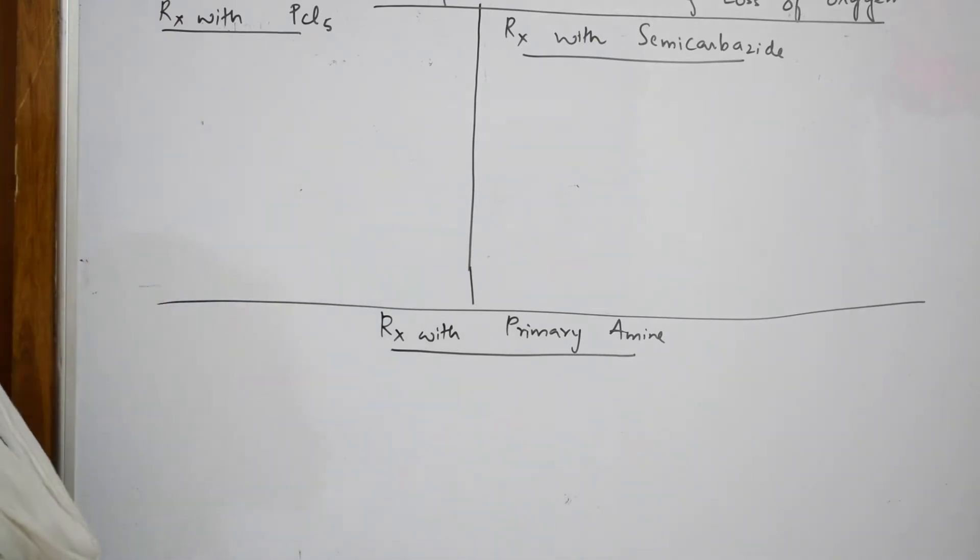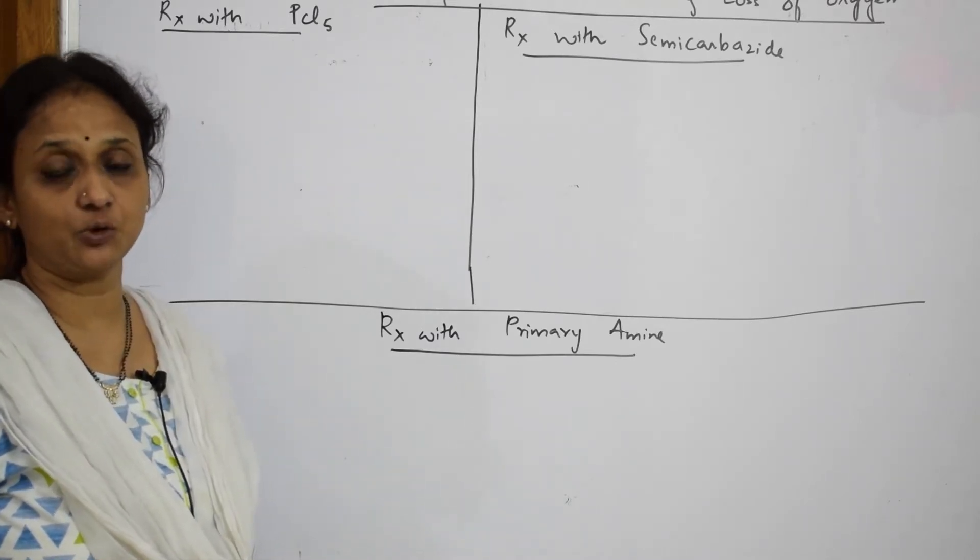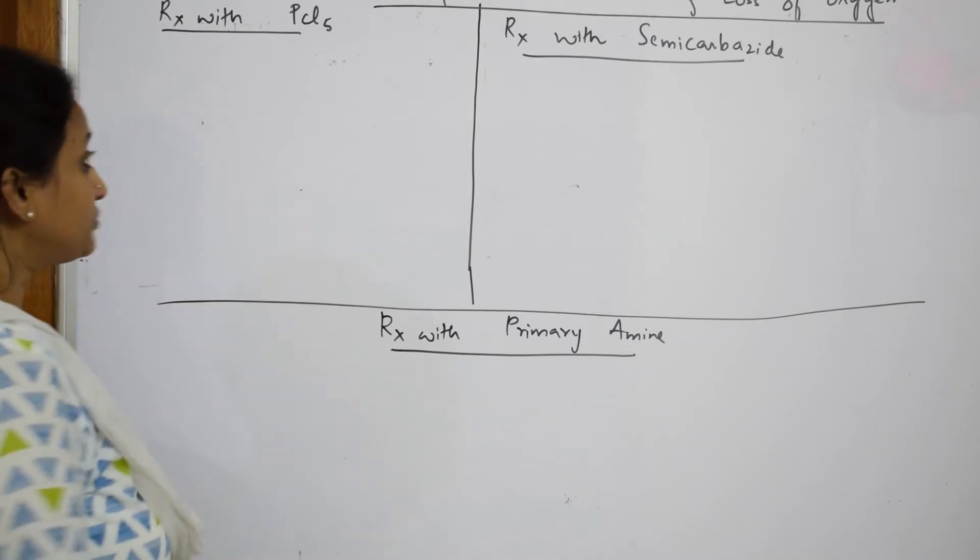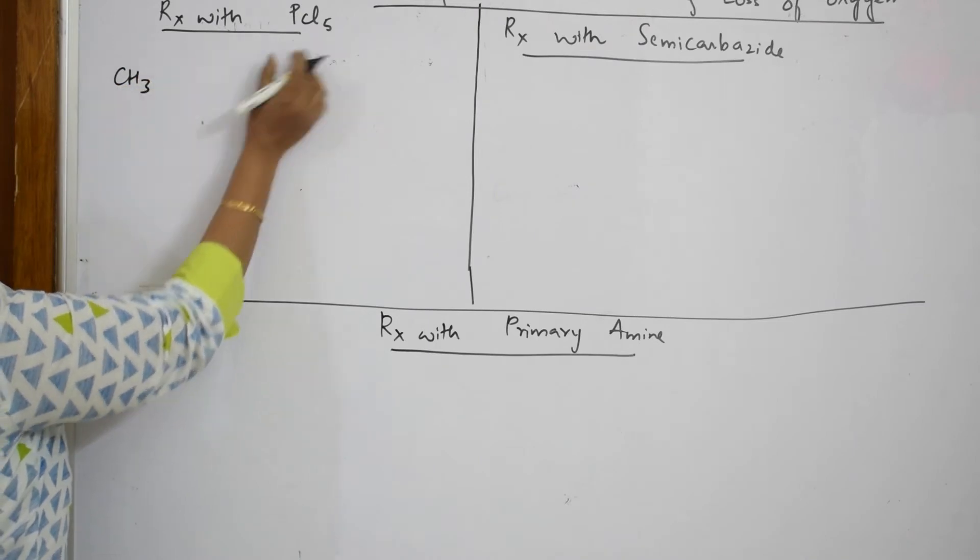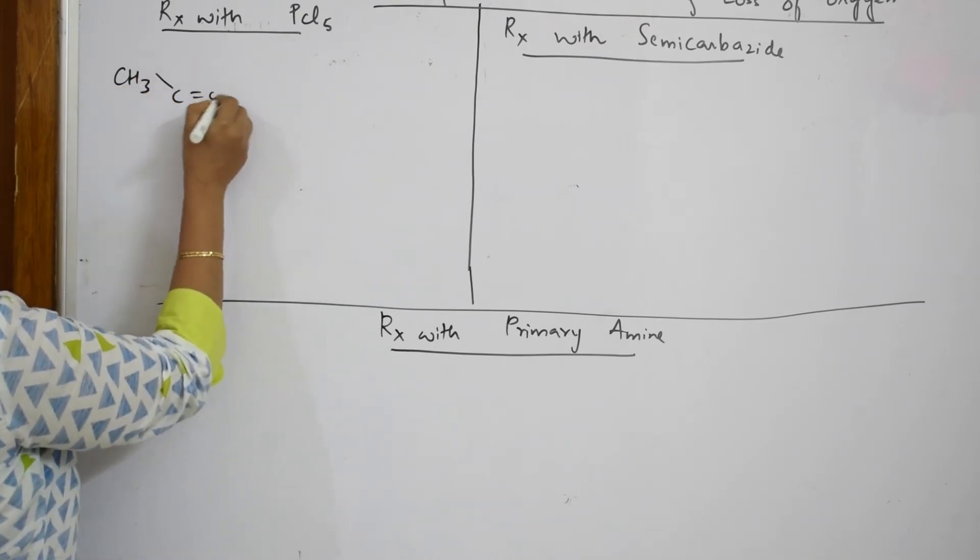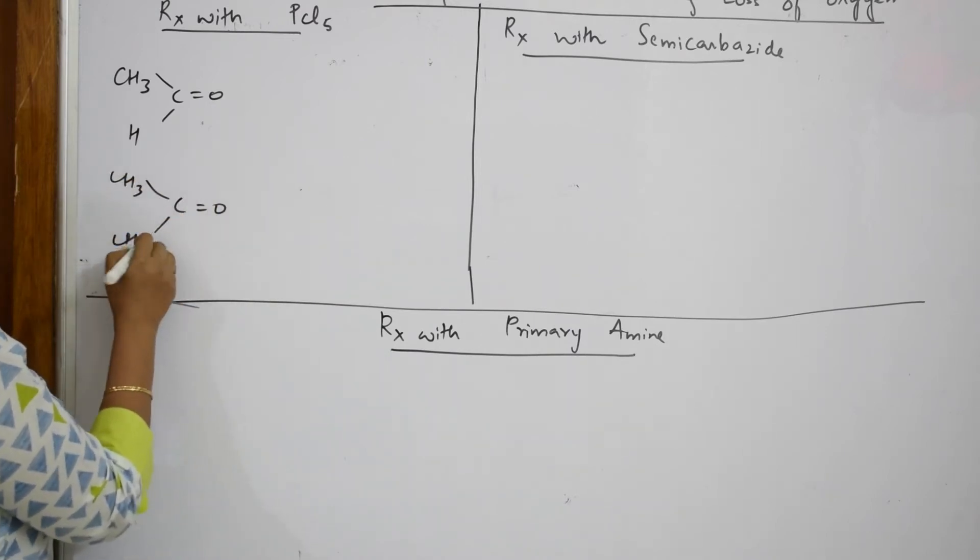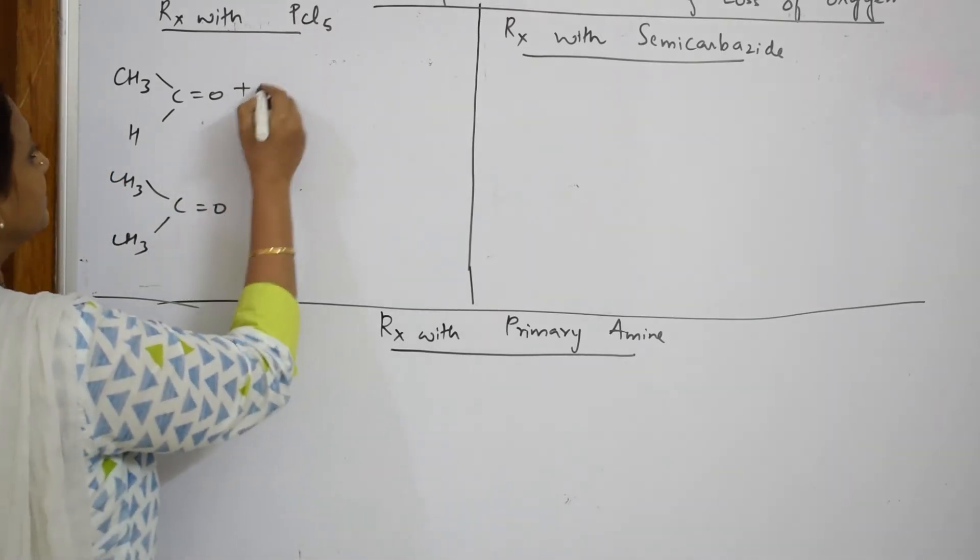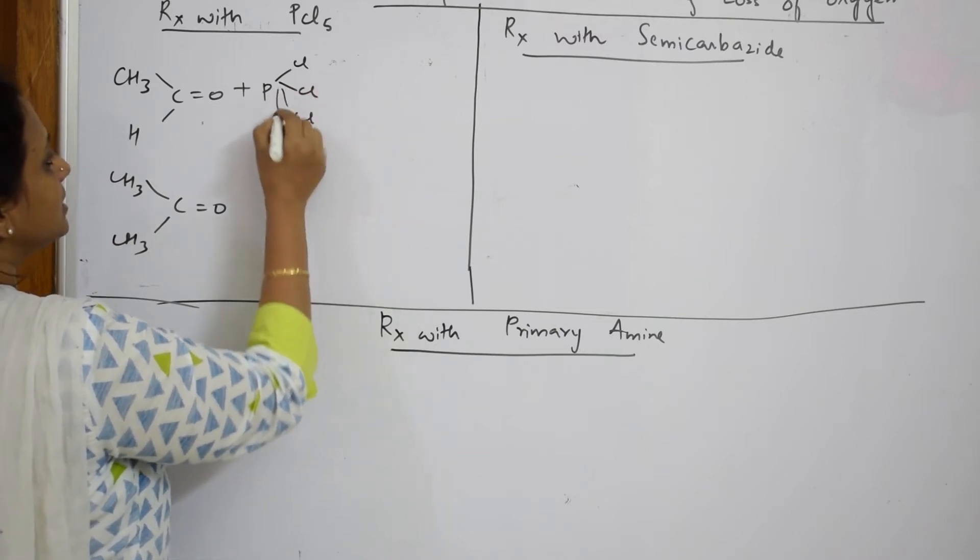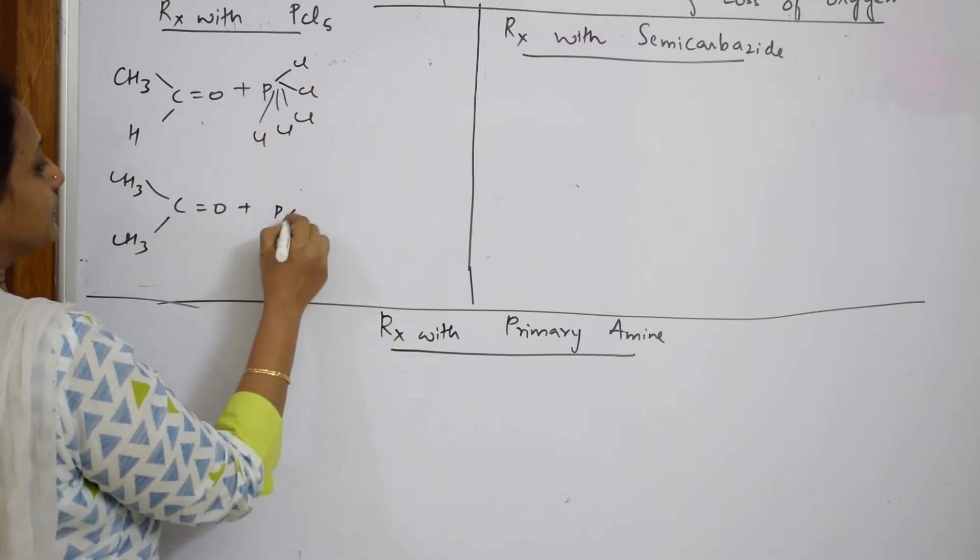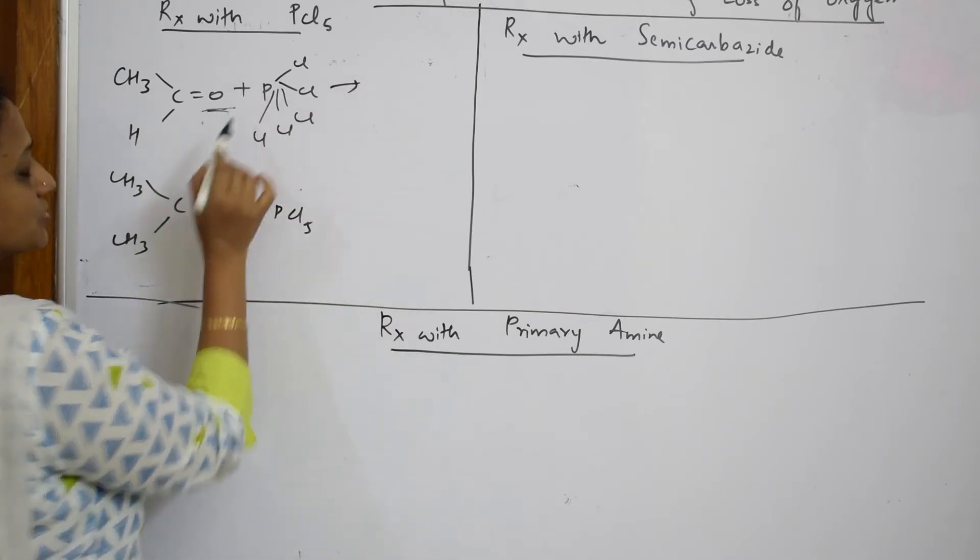When I speak about PCl5, phosphorus pentachloride, we have done this in haloalkanes and haloarenes. Whenever you see PCl5, let us see what happens when it reacts with aldehyde and what happens when it reacts with ketone. So I said whenever we see PCl5, just remember write PCl5 in this way: Cl, Cl, Cl, Cl, Cl and 5. Now observe carefully, first important thing - this oxygen has to be eliminated. That is what we have written, loss of oxygen.